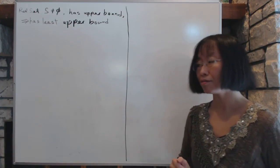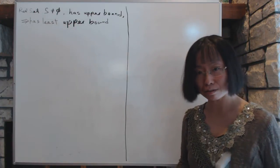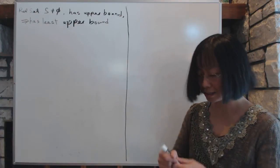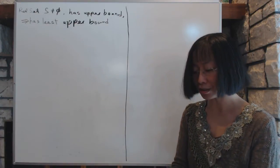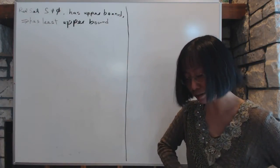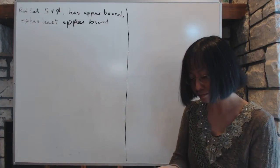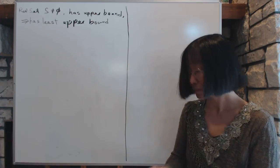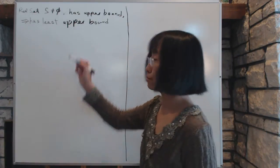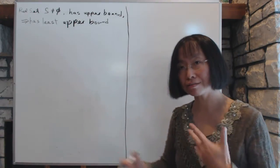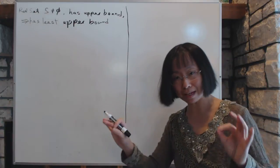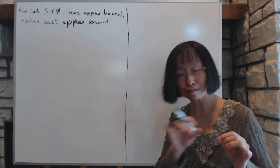This theorem is actually equivalent to the axiom of continuity, and this is what we're going to use it to prove. It essentially says the real number line doesn't have any holes in it.